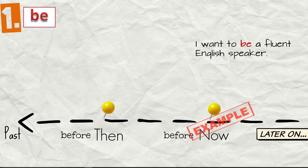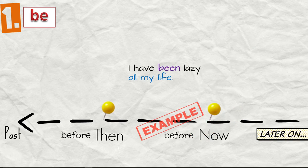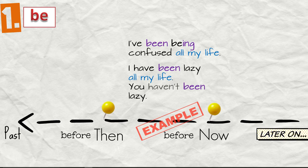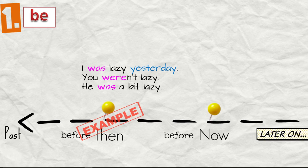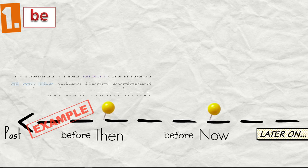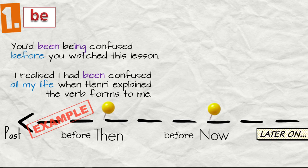I am not good at English grammar. You are just being lazy. He isn't lazy, normally. I have been lazy all my life. You haven't been lazy. I've been being confused all my life. The past: I was lazy yesterday. You weren't lazy. He was a bit lazy. You were being confused. And before then, I realized I had been confused all my life when Henry explained the verb forms to me. You'd been being confused before you watched this lesson.